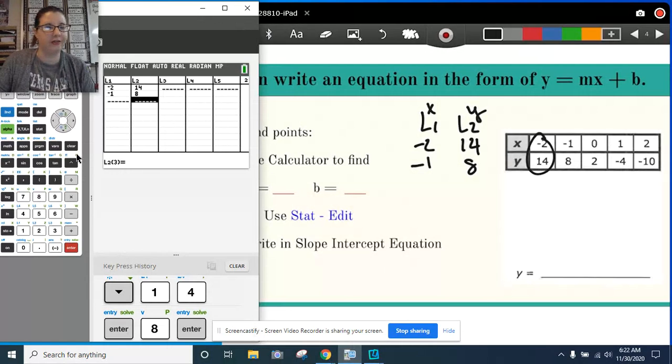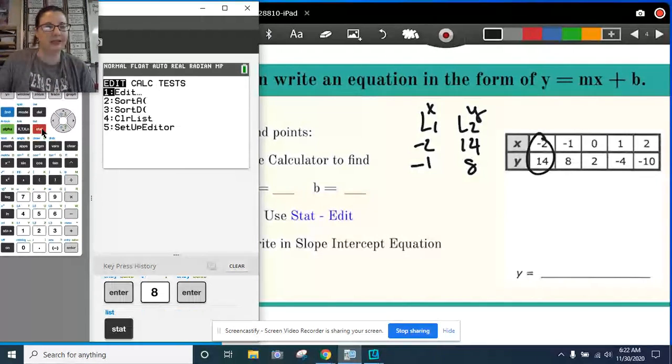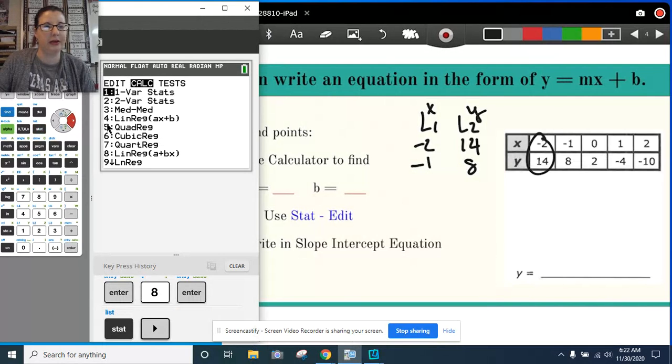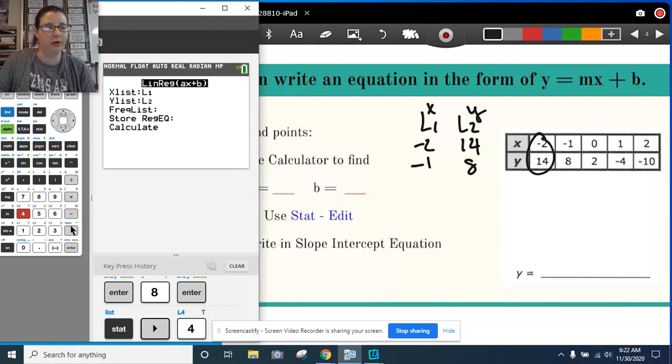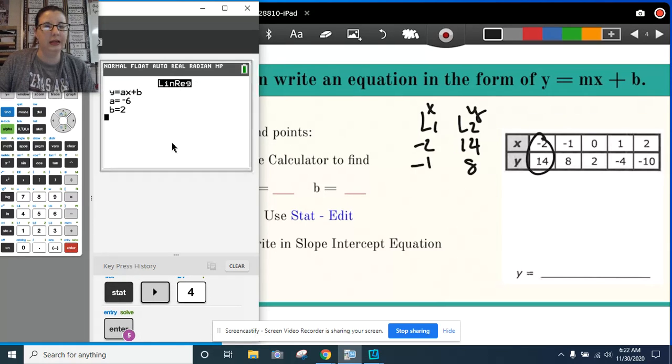Okay, my information's in here. After I do that, I go back to stats. I need to choose calc. So I use the arrow button over to calc, and I'm choosing this option right here, which is the number 4. And I hit enter until I hit calculate.